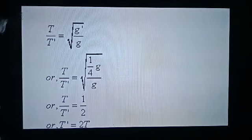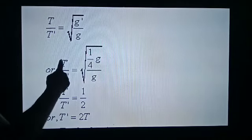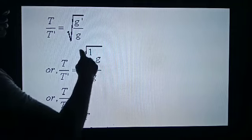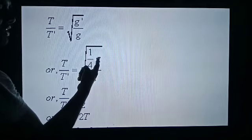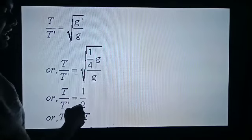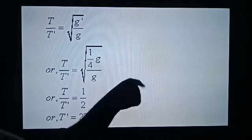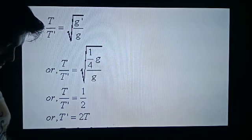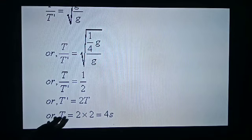So if we solve this problem, we get T upon T' is equal to the square root of G' upon G. Since G' is one fourth of initial gravity, G' upon G becomes 1 by 4. The square root of 1 by 4 is equal to 1 by 2. Cross multiplying, the new time period T' will be twice the initial time period.